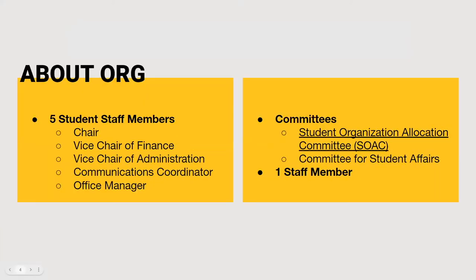ORG has five student staff members who work to support RSOs through multiple different facets of student organization needs, such as finance, administration, and communication. ORG also oversees the Student Organization Allocation Committee, or SOAC, which is a committee made up of students who help to allocate the funds from the student activity fee by reviewing and approving budget requests from student organizations. ORG also works with the Committee for Student Affairs to give recognition to new student organizations and take away recognition from those who do not meet annual requirements. There is currently one full-time staff member who works to support student organizations on Mizzou's campus.